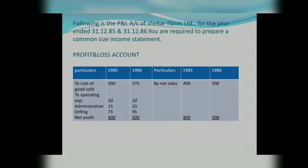Following is a P&L Account of Shaker Fibers Limited for the year ended 31 December 1985 and 31 December 1986. You are required to prepare the Common Size Income Statement.